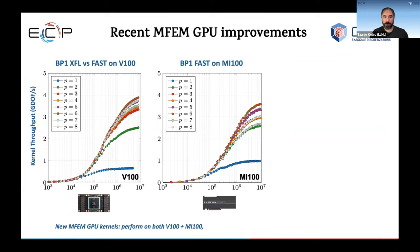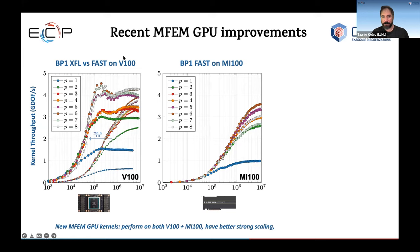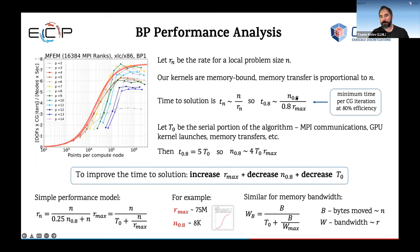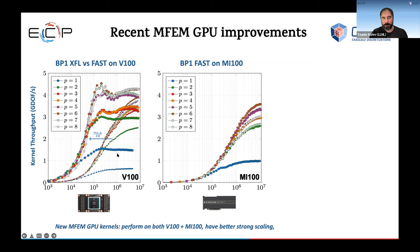Let me show you a few benchmark results from just one of our applications: the MFEM finite element library, one of our flagship high-level applications. This is an example of BP1, the mass matrix on a V100 and MI100, showing that we get performance-portable code — with the same code base we can get decent performance on both machines, up to about four giga DOFs per second. Recently we improved N_0.8 by shifting all these curves to the left using extreme kernel fusion, achieving about 10 times faster time to solution.